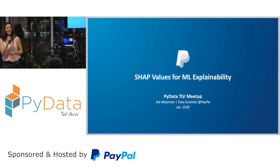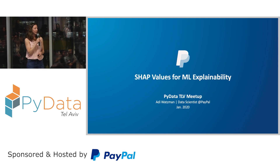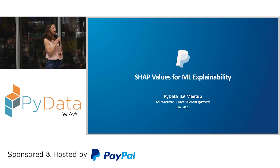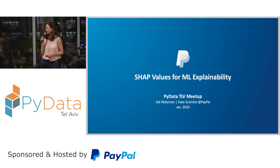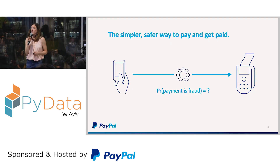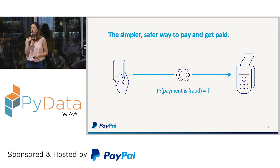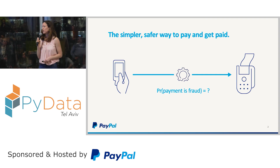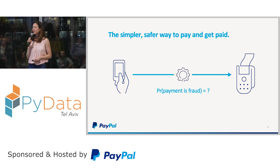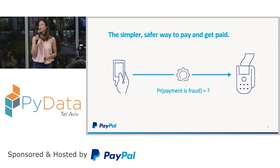Hi everyone, thank you for coming. My name is Adi and I work here at PayPal as a data scientist. My job is to develop machine learning algorithms for fraud detection. PayPal is known for being safe and secure, and maintaining this reputation requires hard work behind the scenes developing fraud detection algorithms.